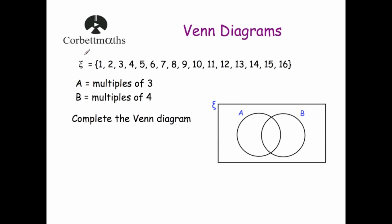So we've got the symbol Xi, which is a letter in the Greek alphabet. It represents a universal set — it means all the data that you're interested in in the question. The curly brackets are set notation. So here Xi says the set of information we're interested in is the numbers 1 to 16. A is defined as the multiples of 3, B is defined as the multiples of 4, and we've been asked to complete the Venn diagram.